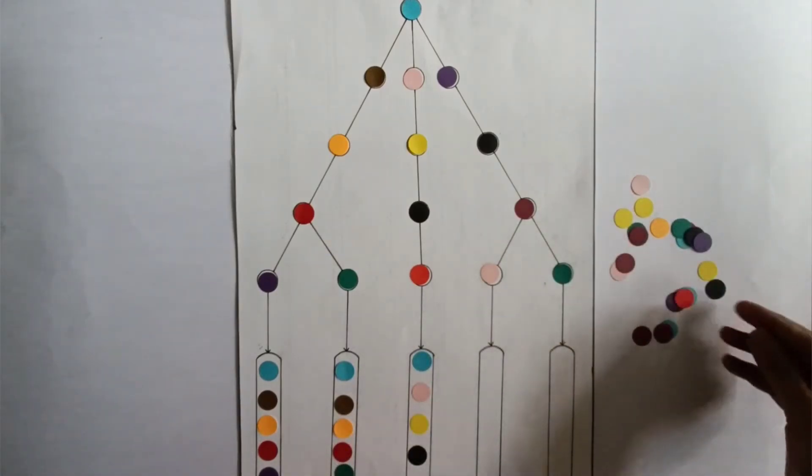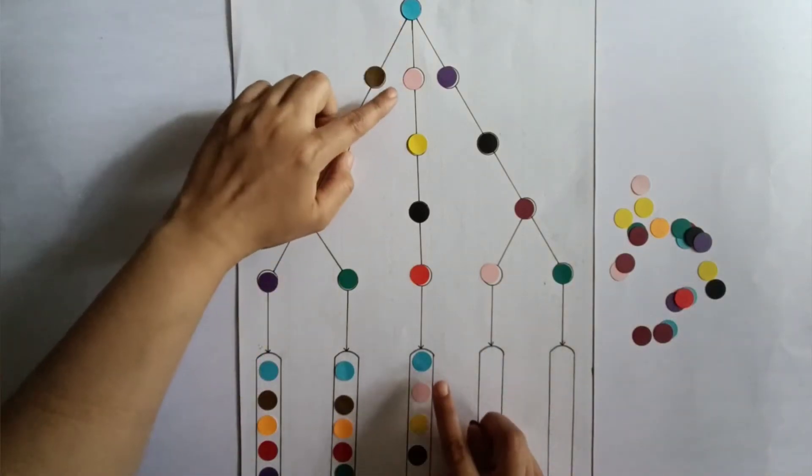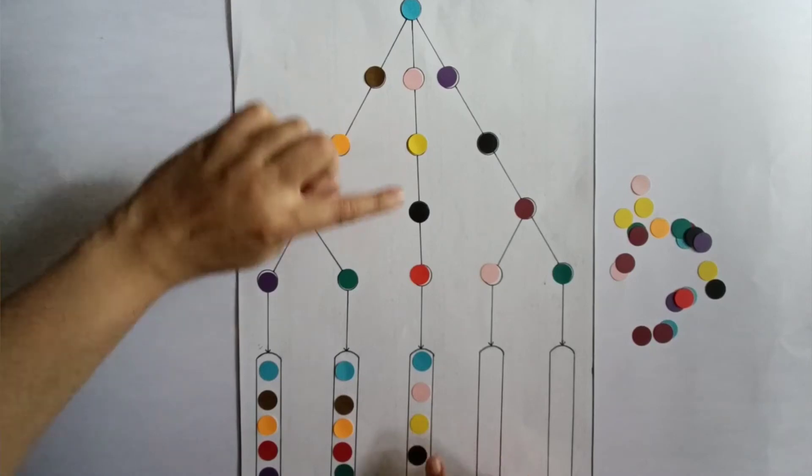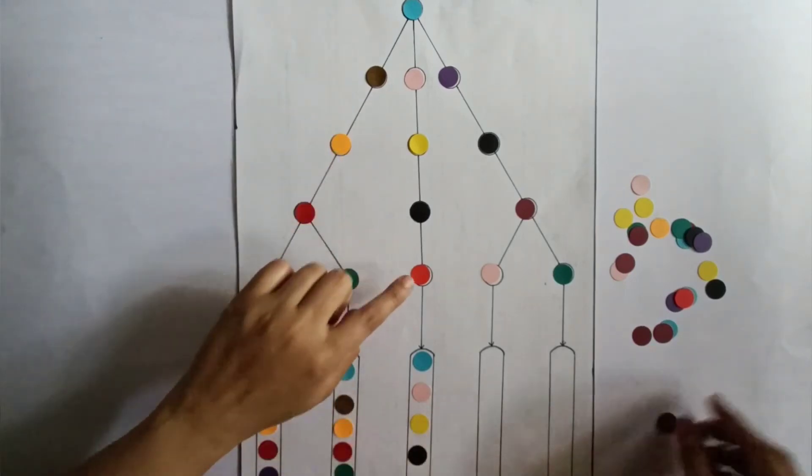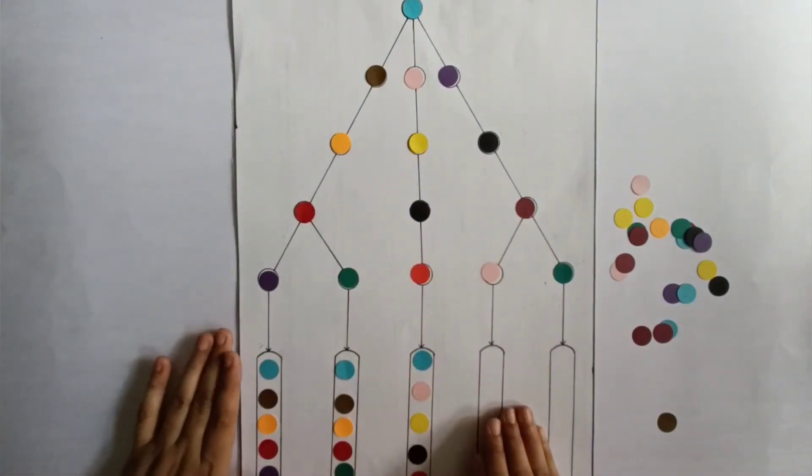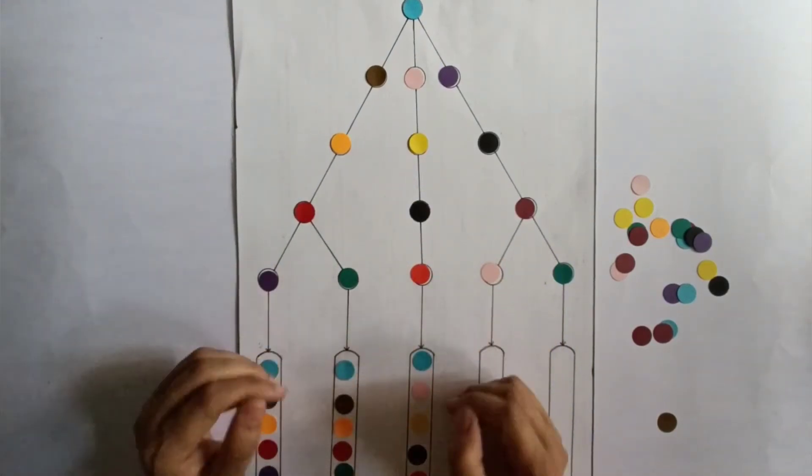This is a very nice activity to keep a child engaged for a longer time. Here, as you can see, I have put all the colors in the straight position. The child is supposed to do this activity in the same way and fill the next two containers also.